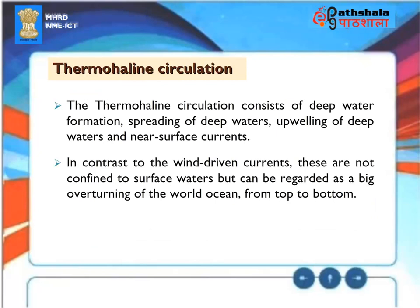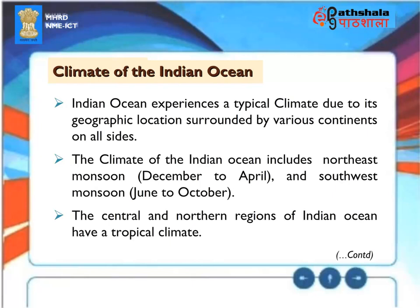Thermohaline Circulation. The thermohaline circulation consists of deep water formation, spreading of deep waters, upwelling of deep waters, and near-surface currents. In contrast to wind-driven currents, these are not confined to surface waters, but can be regarded as a large overturning of the world ocean from top to bottom.